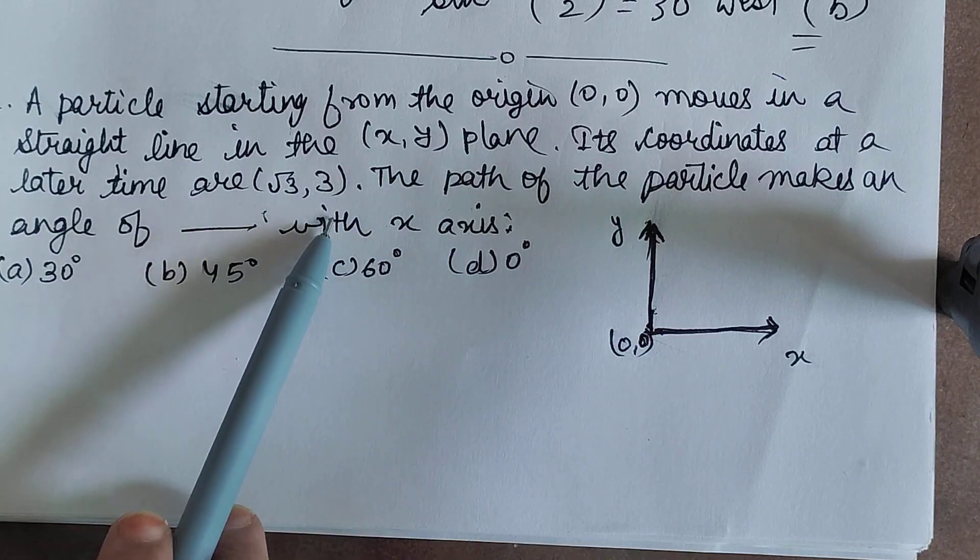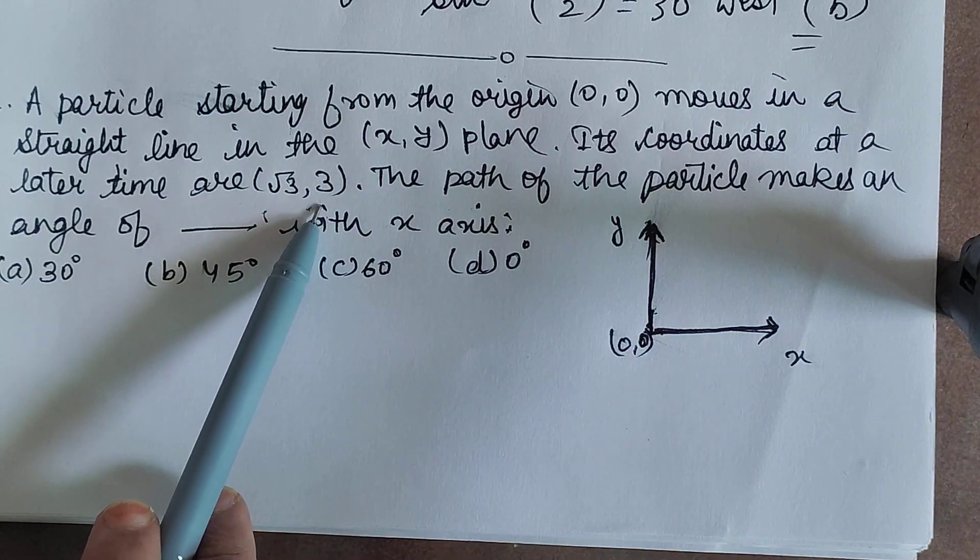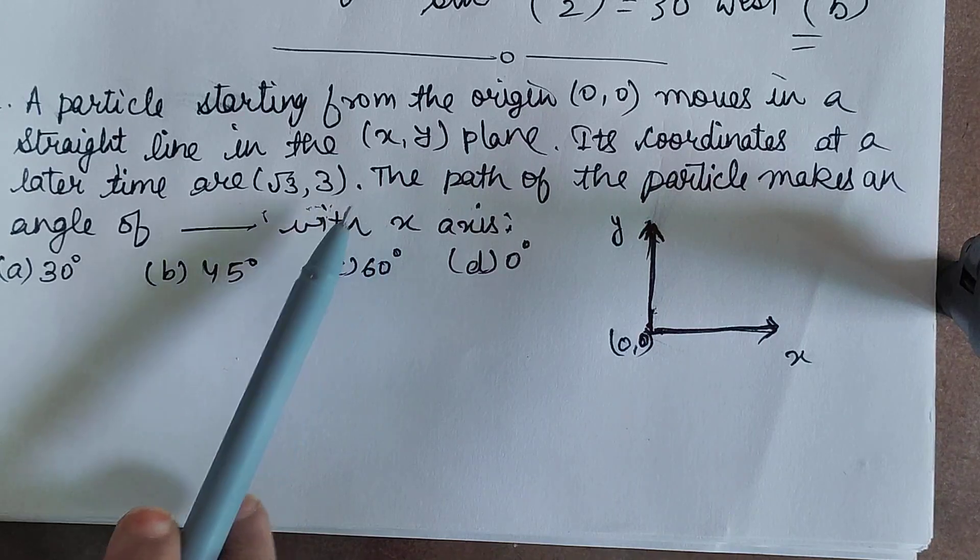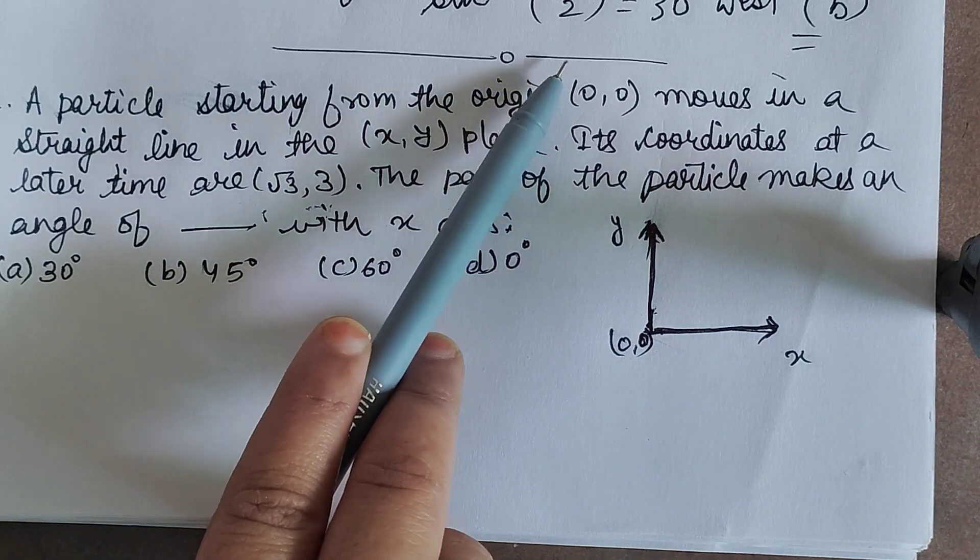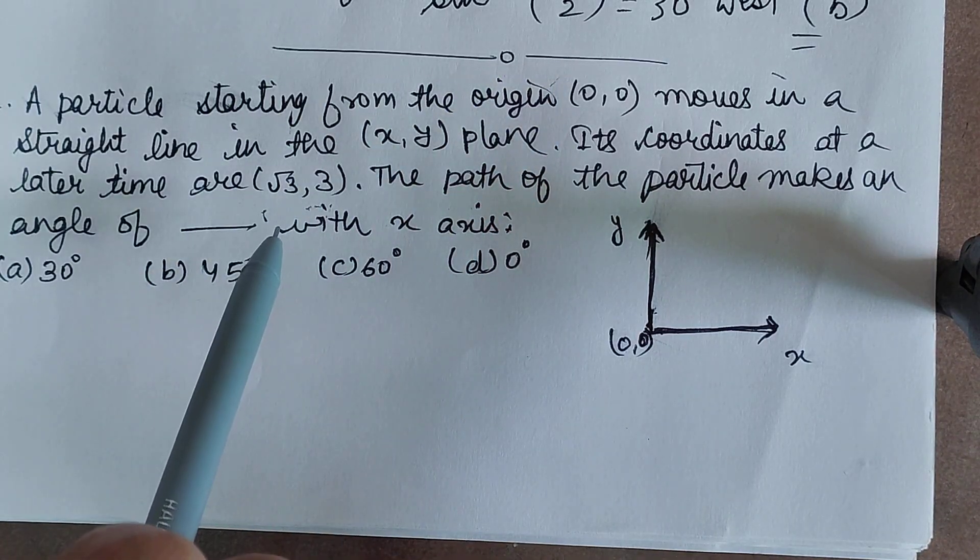Its coordinates after a certain time are root 3, 3. So in the starting position its position is 0, 0 and after a certain time its coordinates are root 3, 3.